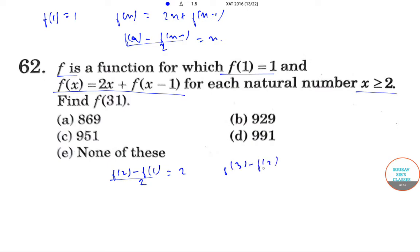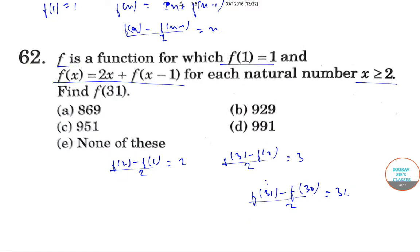f3 minus f2 by 2 equals 3, and so on we get f31 minus f30 by 2 equal to 31. Now, adding these equations, we get half f31 minus f30 plus f30 minus f29 and so on to plus f2 minus f1 is equal to 2 plus 3 plus 4 plus 30 plus 31.